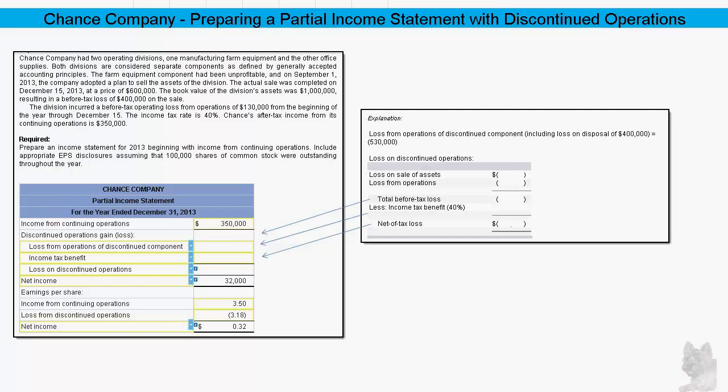On the right portion of your screen, I've provided an explanation of how you need to solve discontinued operations — specifically the gain or loss from discontinued operations. You need to break it down into the loss from operations of the discontinued component, the income tax benefit, and then the net loss of discontinued operations. With that explanation, you should be able to fill in the missing numbers and follow the arrows showing where they go.